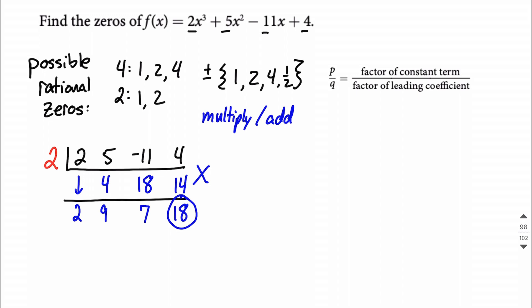Next, let's just try 1. 1's pretty easy to work with. Multiplying by 1 gives you the same value. So we still have 2, 5, negative 11, and positive 4 go up here. First digit, the 2 comes down, and we're on to our multiply step. So 1 times 2 makes 2. Add, 5 plus 2 is 7.